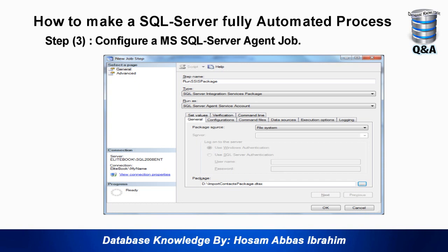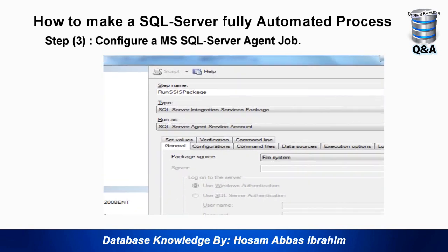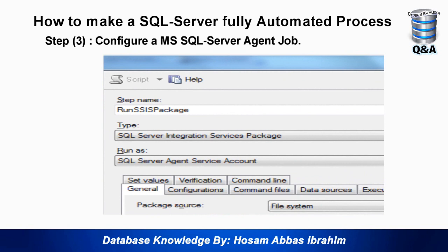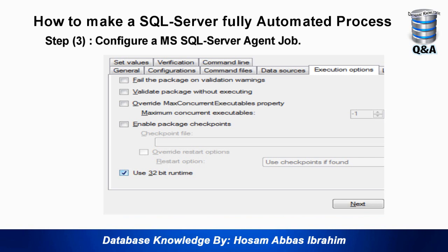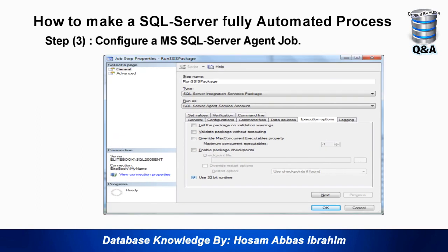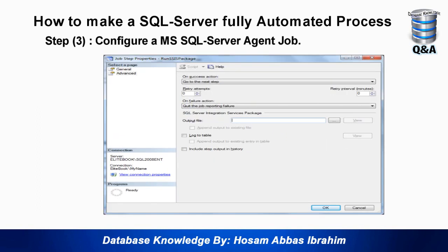Go to Steps and press New. This is the first step: in our scenario we transfer data from Microsoft Access to the staging table. I name it 'Run SSIS Package' and change the type to 'SQL Server Integration Services Package'. Then in the General tab change the Package Source to 'File System', and browse to the package file we created in step one. Very importantly, go to Execution Options and check 'Use 32-bit runtime'.